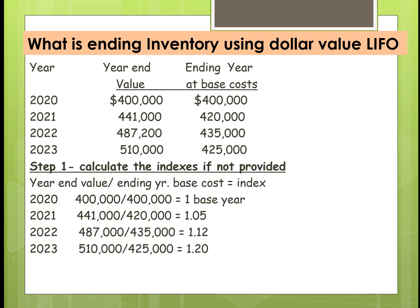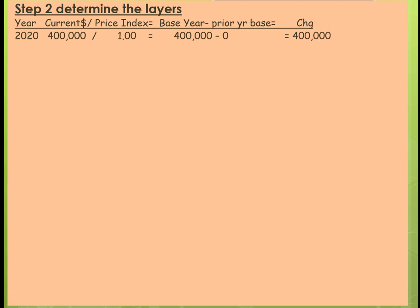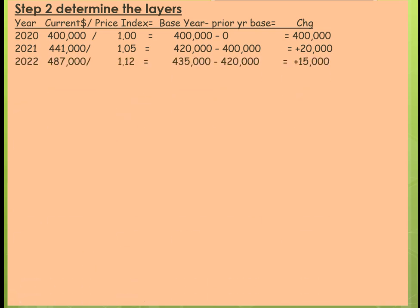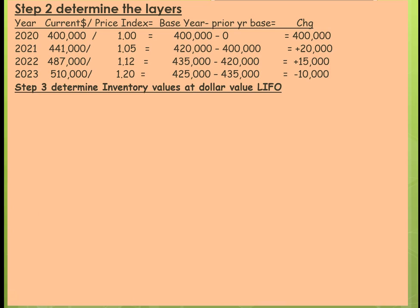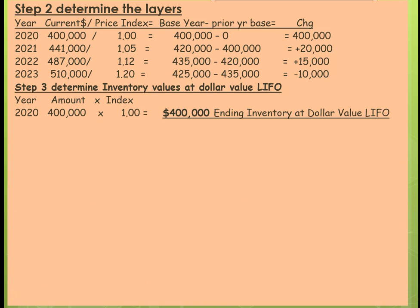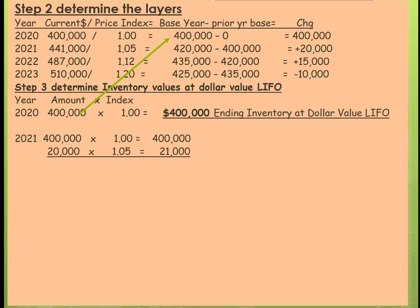Now we can work the problem. For 2020, the first year is always the base year. For 2021, we added a layer of $20,000. In 2022, we added a layer of $15,000 at the 1.12 index. For 2020, the ending inventory is valued at $400,000 because that's the base year. For 2021, we have the base plus a layer of $20,000 times the index of $1.05, so the ending inventory for 2021 is $421,000.